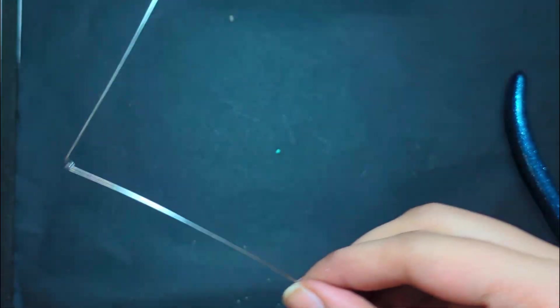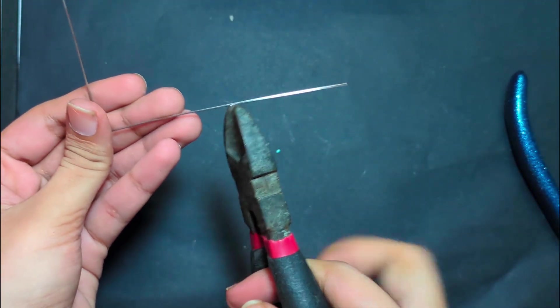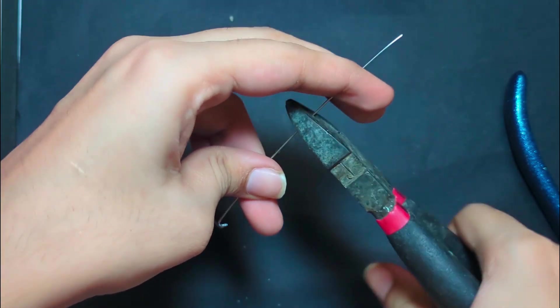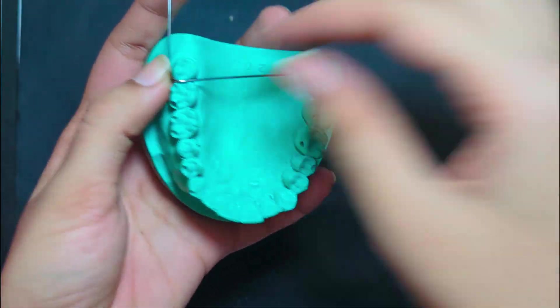Cut excess wire which interferes with placing on the cast. While cutting, fold the two ends of the wire then cut. This prevents flying of cut wire onto someone near you.